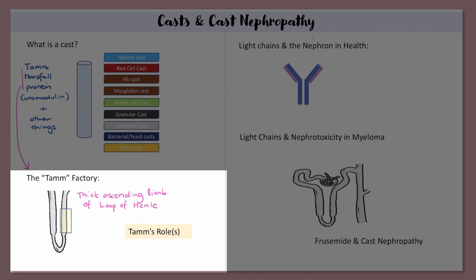But what does Tam actually do? The short answer is we're not 100% sure. But on the basis of mostly animal studies, we think he might be involved in a few things such as regulating ion channels and affecting the permeability of the loop of Henle. We also think that he may have an important role in preventing urinary tract infections — Tam actually binds to fimbriated E. coli and prevents these E. coli from attaching to our urothelium.